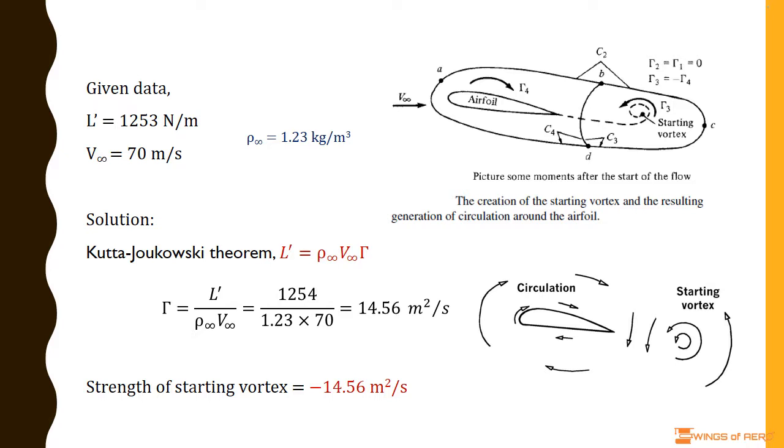This high vorticity region is fixed to the same fluid elements and consequently, it's flushed downstream as the fluid elements begin to move downstream from the trailing edge. As it moves downstream, this thin sheet of intense vorticity is unstable and it tends to roll up and form a picture similar to a point vortex. This vortex is called the starting vortex.